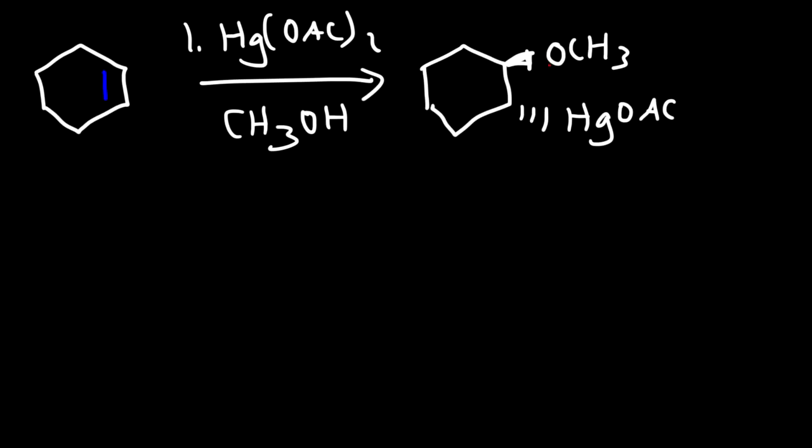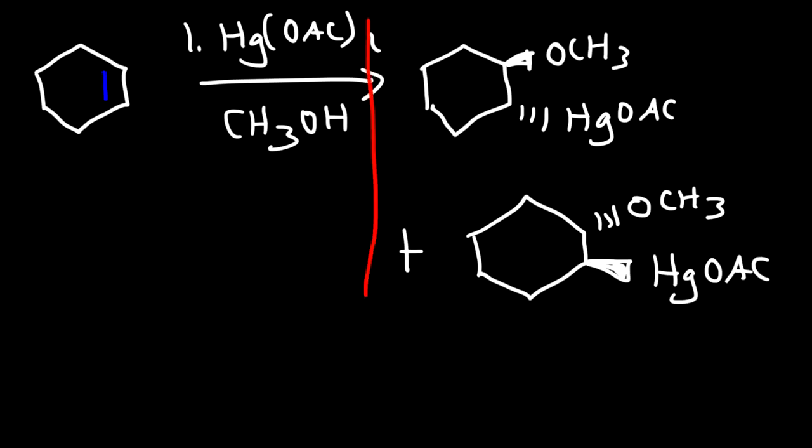So as you can see, the OCH3 group is on the wedge and the mercury acetate group is on the dash. Now, we can also get the enantiomer. So we get a racemic mixture of products here. So these are the two products that we can get in this reaction after the first step.